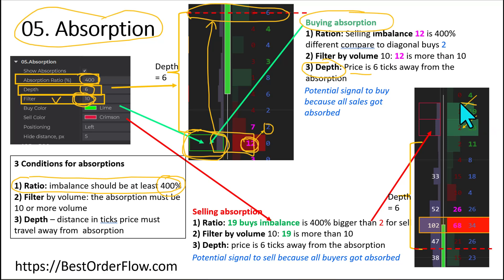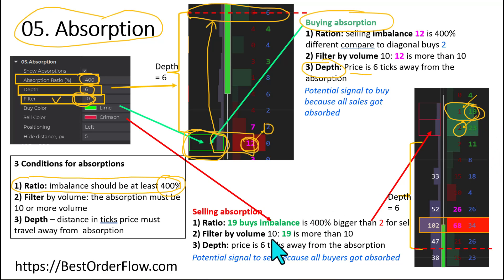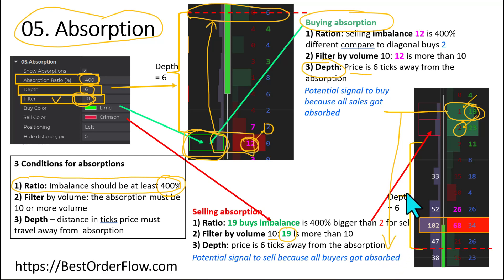The selling absorption over here calculates that we have a buying imbalance of 19, which is more than two by 400% or more. 19 is also more than our filter of 10, so it's valid. And now we can see that the price travels from this area — when it travels more than six ticks, which we selected as a depth, then the imbalance becomes visible to us as a signal.